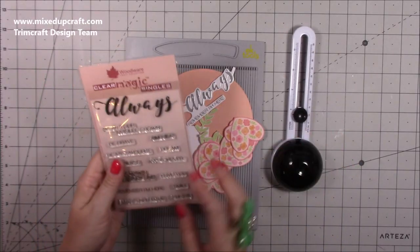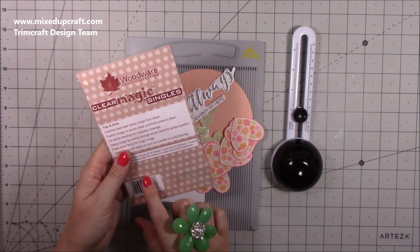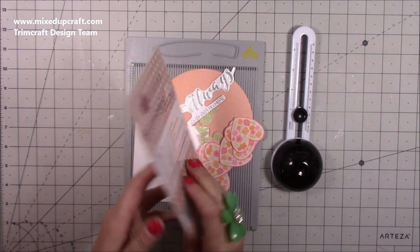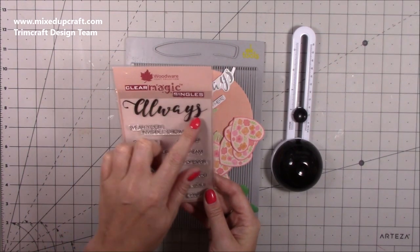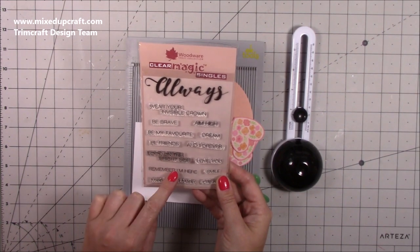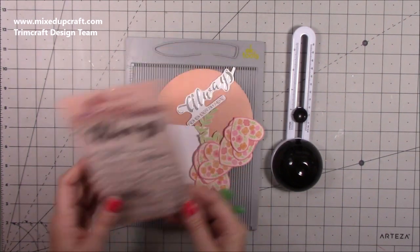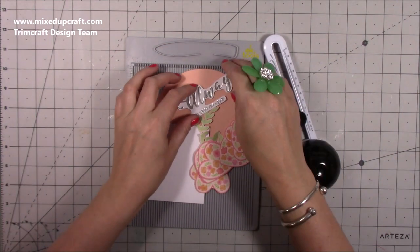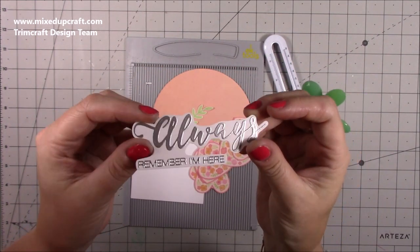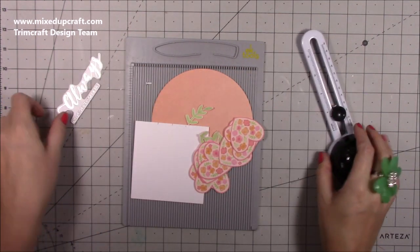What you're going to need: I've got this stamp set that I use for my sentiment, which is the Always by the Woodware Clear Magic Singles. I've just done for this one it's Always, and then you can choose your subtitle, so I've got Remember I'm Here. And I've already gone ahead and stamped that, and then I just fussy cut it with silver embossing powder, so that's all done.